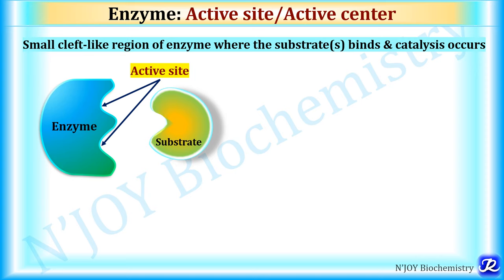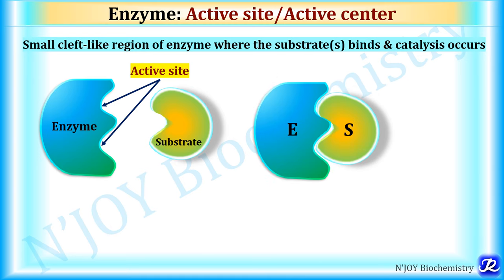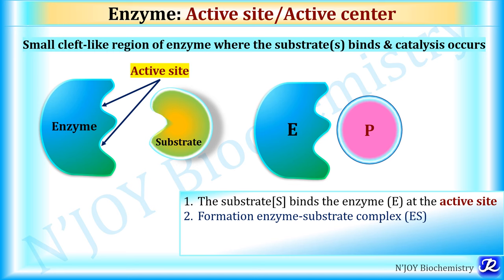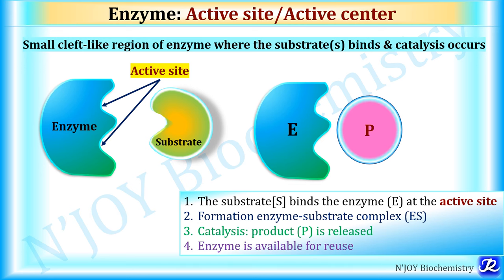Within the active site, substrates are brought into close proximity to one another in optimal alignment with the cofactors, prosthetic groups, and amino acid side chains that participate in catalyzing the transformation of substrate into products. At the active site, substrate binds, catalysis occurs, and products are formed. The first step of enzyme action is binding of substrate to the active site, forming an enzyme-substrate complex, followed by catalysis and product release, after which the enzyme is available for reuse.